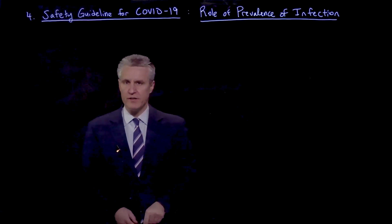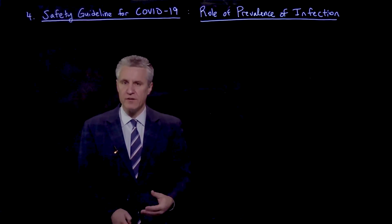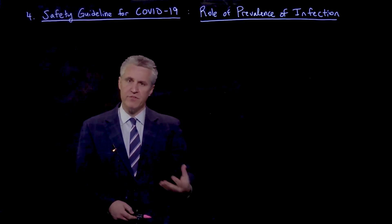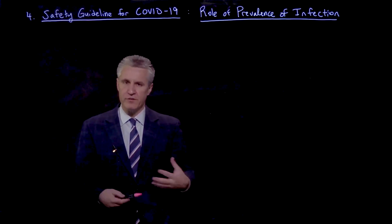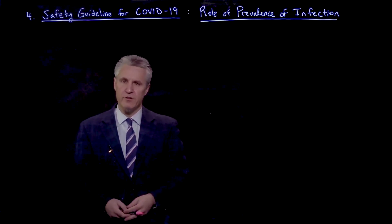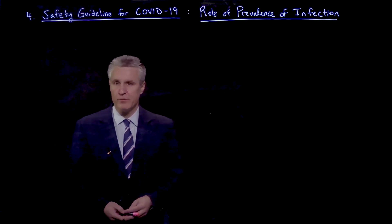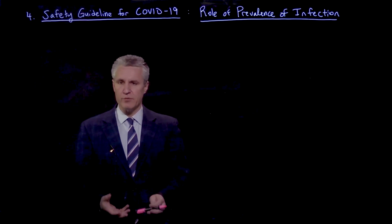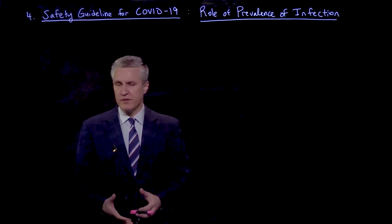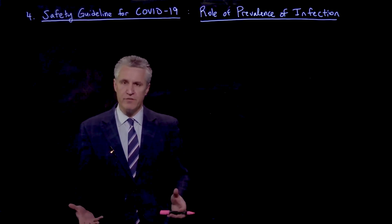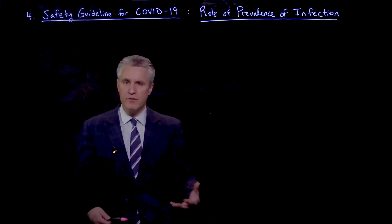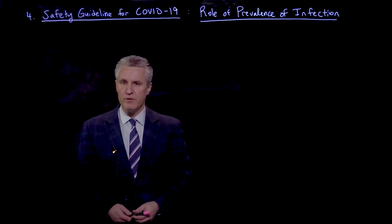So until now, we've based the safety guideline on the indoor reproductive number, which is essentially the expected number of new infections from a single infected person per infected person in the room. And in many cases, that is the right variable to think about. It's essentially the most conservative definition that allows us to limit the spread of the disease at the population level. If every room were doing that, we would control the spread of the epidemic.